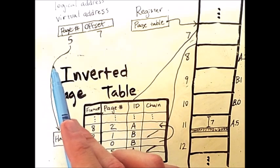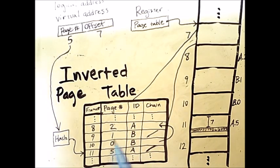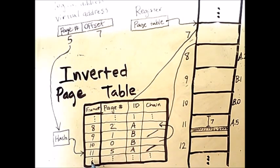We take the page number and send it to a hashing function. The hashing function will take that page number and somehow spit out a frame number. For this example, the hash function happens to map 5 to 11, which is the frame number. Now, it is possible that the hashing function will map multiple page numbers to the same frame value, so we have to be careful. We must check the inverted page table to make sure that both the page number and the process, here A, are correct.